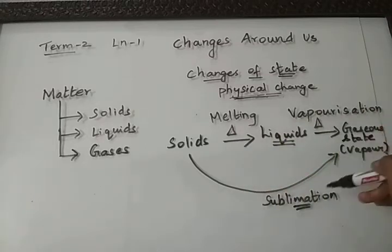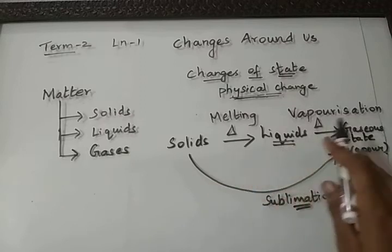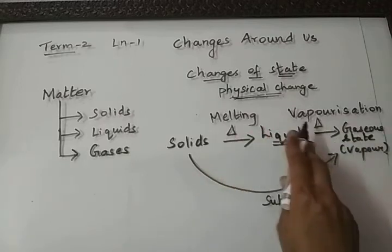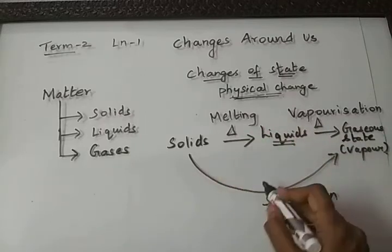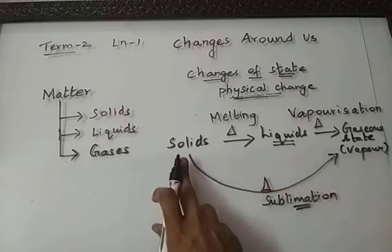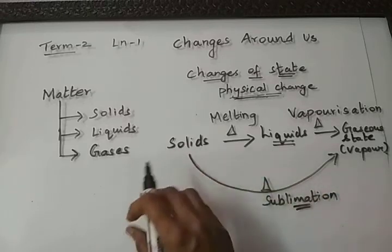Melting, vaporization, and sublimation are the processes involved in the change of state where heat has to be supplied. Either heat has to be supplied, or the material will absorb the heat from the surrounding.